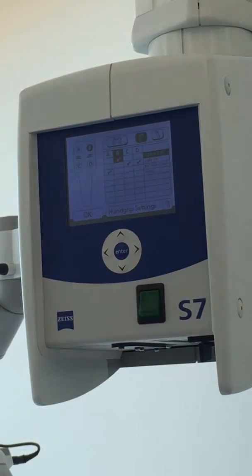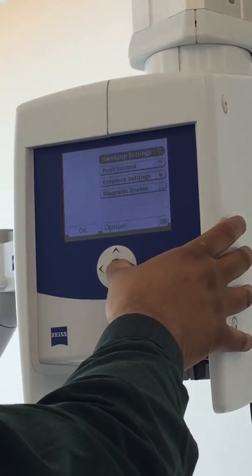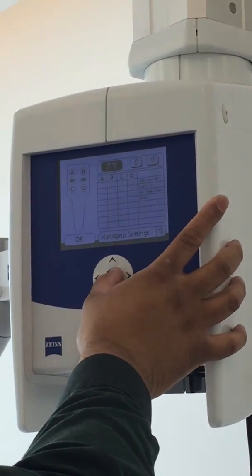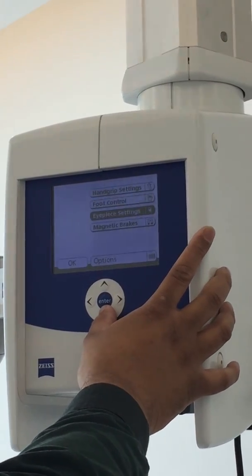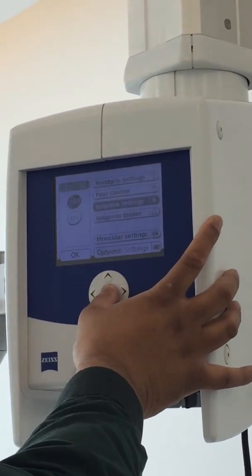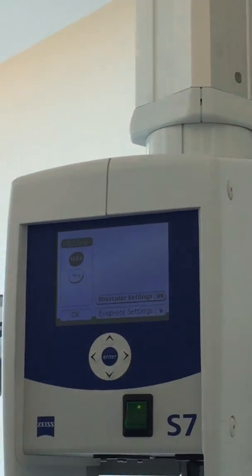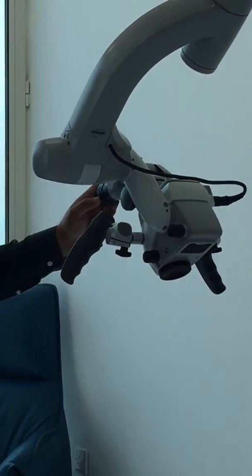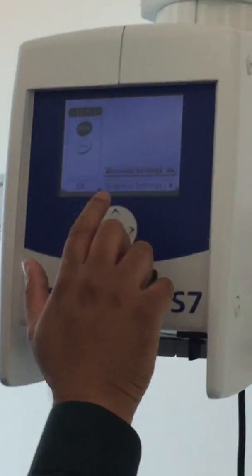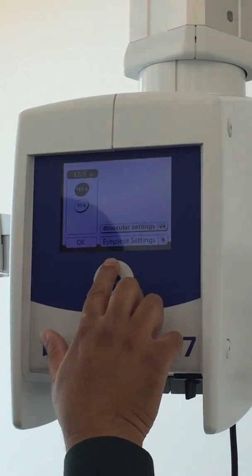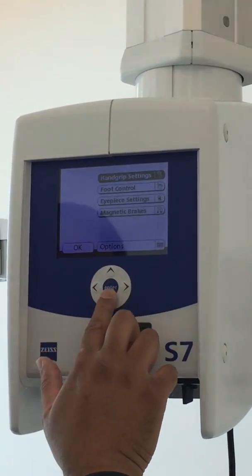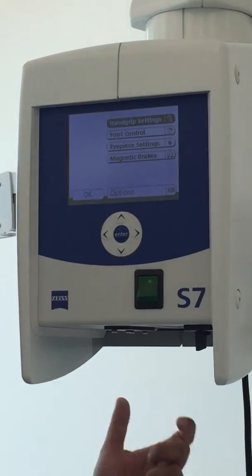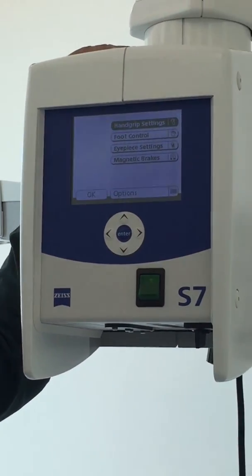The same thing can be done for the other settings. Or you can do it for the foot control. IP settings. This is done once. You can see these eyepieces are 12.5x. So you set it there. Magnetic brakes are always on. Sometimes you find that the brakes are not working. You can come and check here. Double check here. Somebody has switched it off.